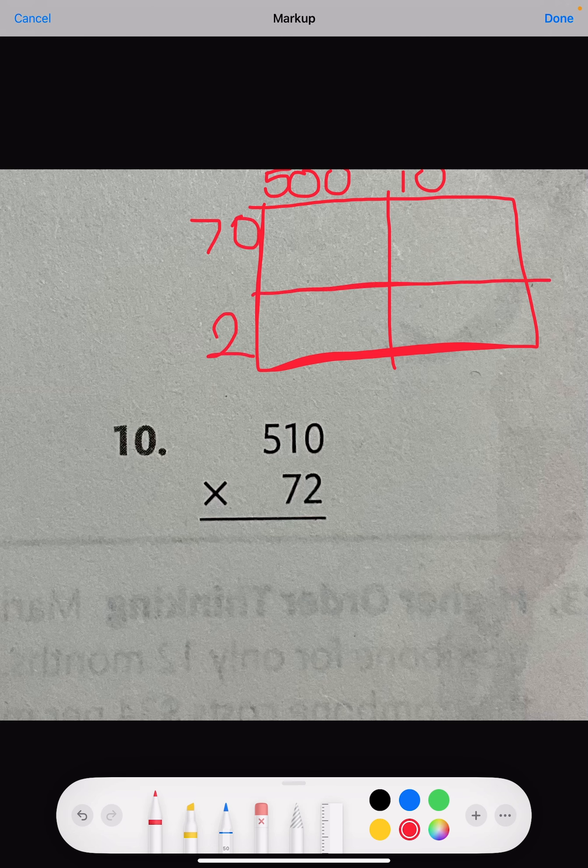Next, we're going to place all partial products in the spot, starting with the zeros in 500 and 70. There are two zeros in 500, so we're going to place them down, and one zero in 70.